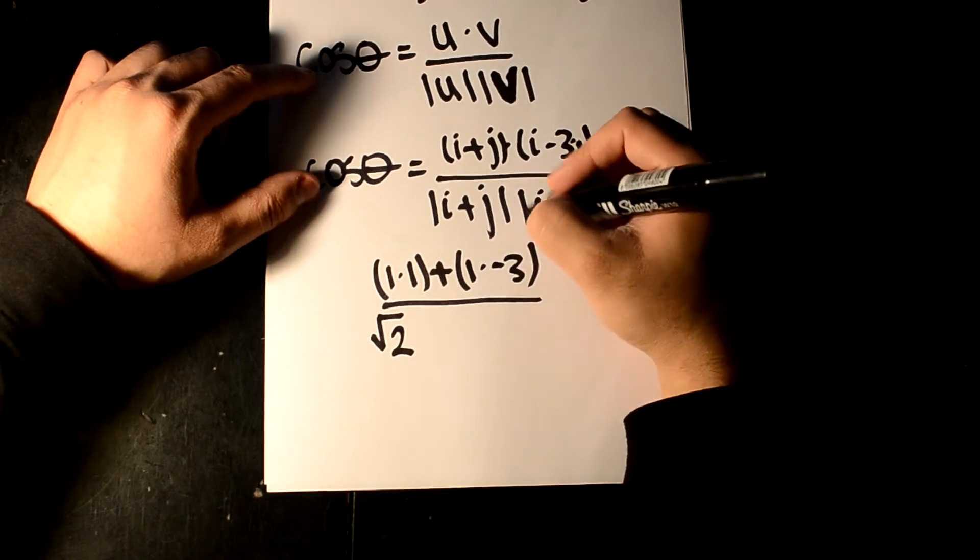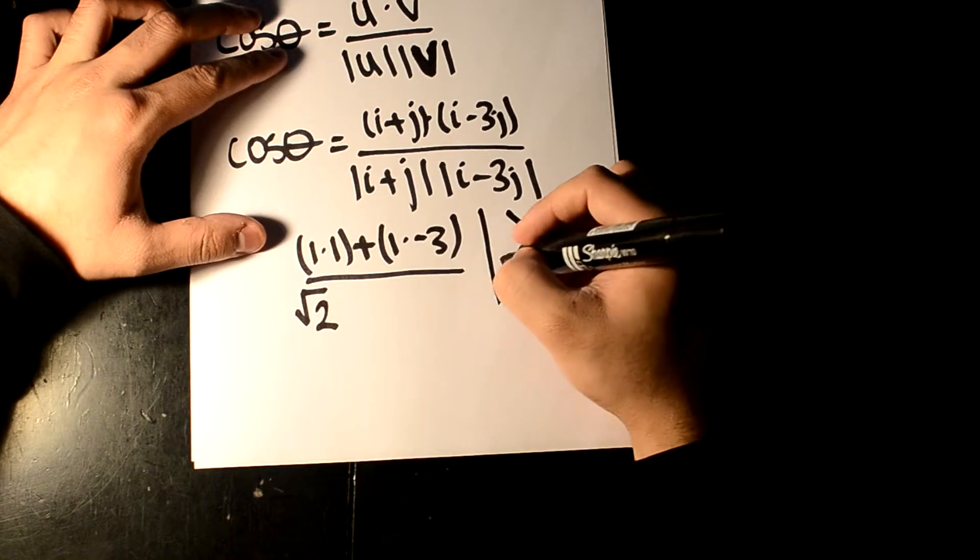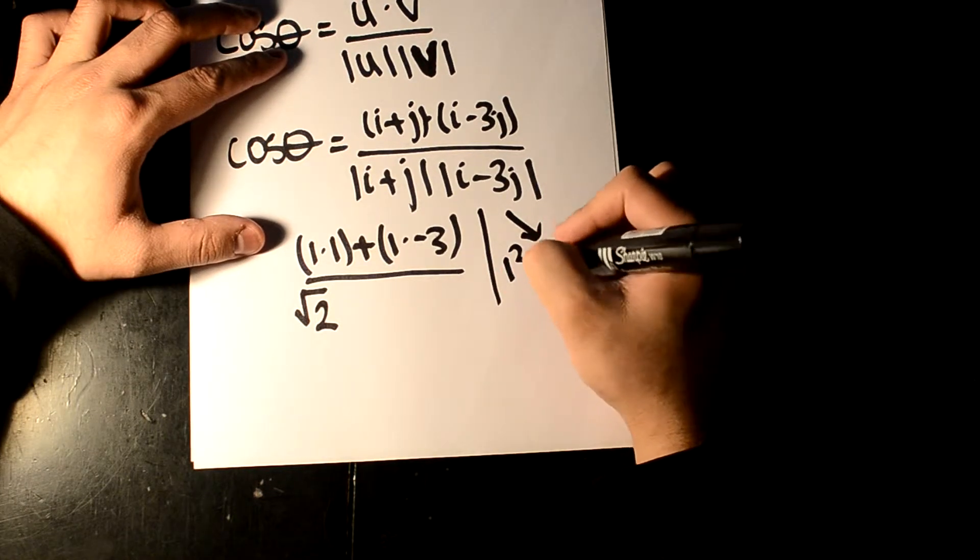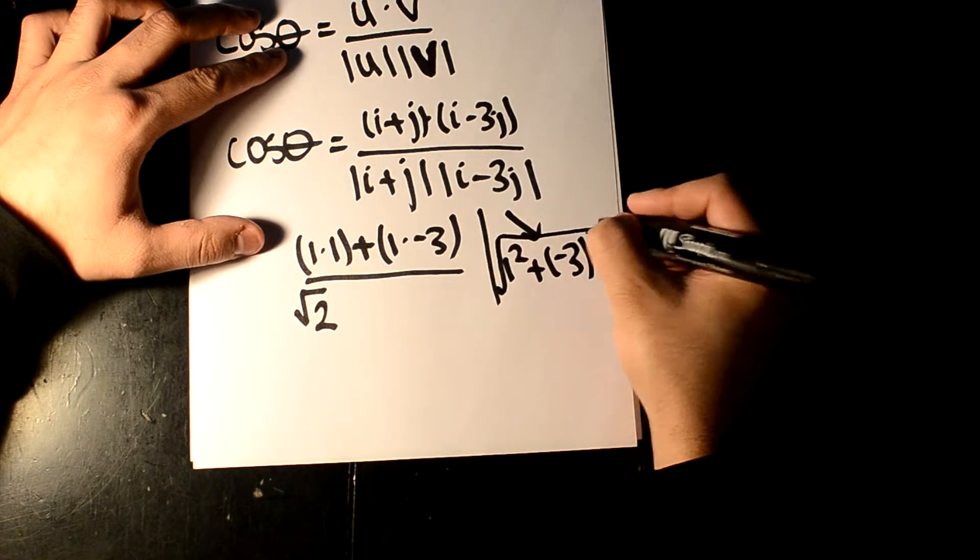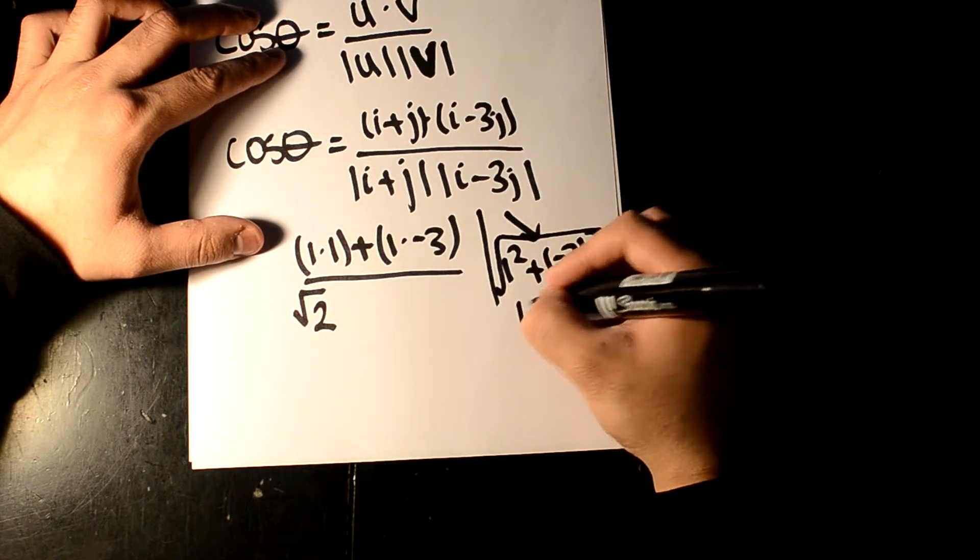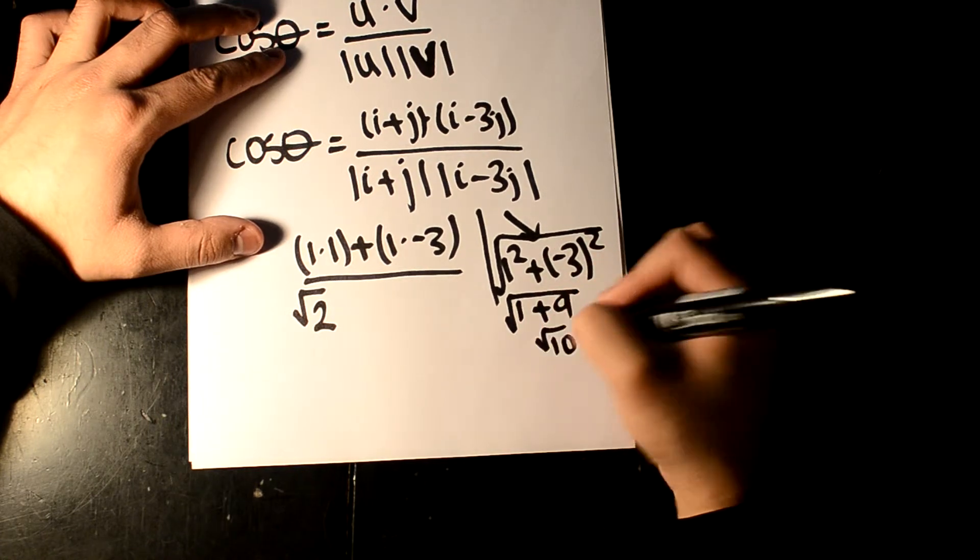We'll then look at this part here, and this is going to be, if I just take a little side bit here, it's going to be 1 squared plus minus 3 squared all square rooted. So that's going to be 1 plus 9, which is going to be square root of 10.